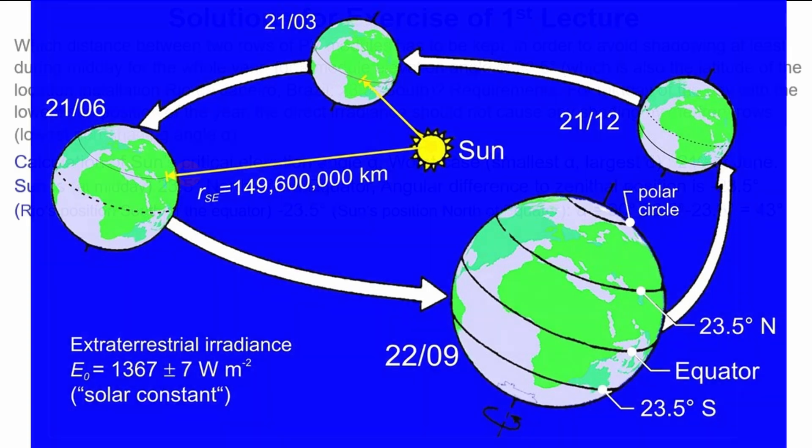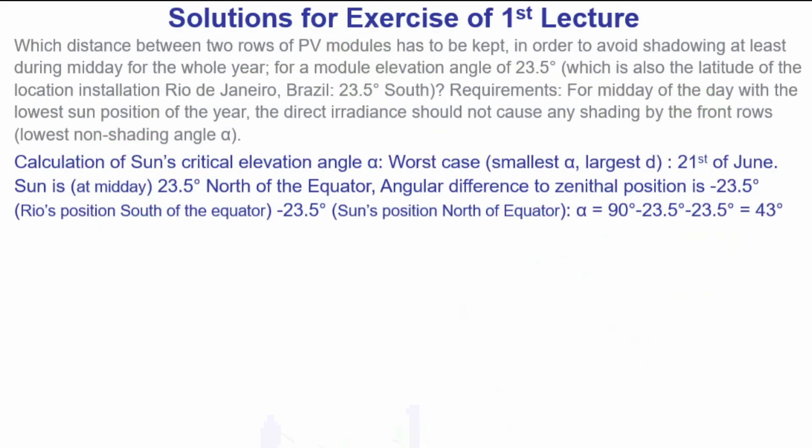The sun is then at midday 23.5 degrees north of the equator. This is our summer because it's approaching us. Maximum it gets towards north is 23.5 degrees.